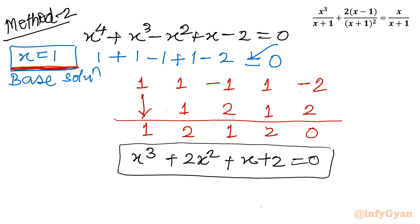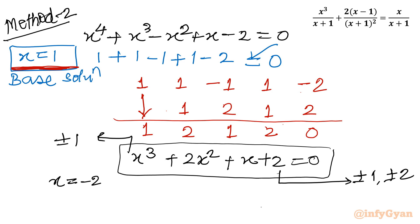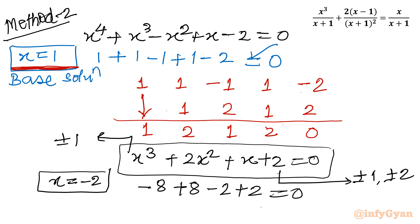Applying the rational root theorem to x³ + 2x² + x + 2 = 0: eligible factors of the constant term are ±1 and ±2, and the leading coefficient gives ±1. Testing x = −2: (−8) + 2(4) + (−2) + 2 = −8 + 8 − 2 + 2 = 0. So x = −2 is a base solution for this cubic equation.